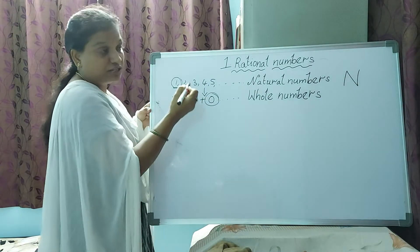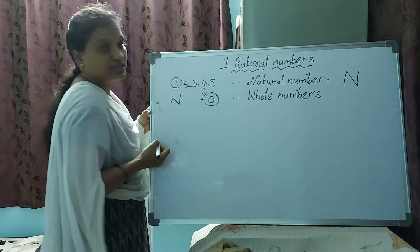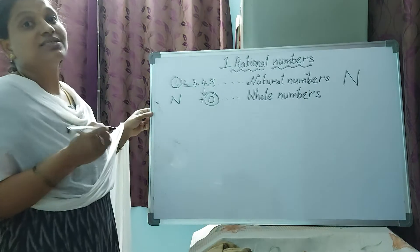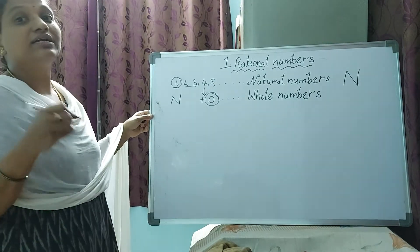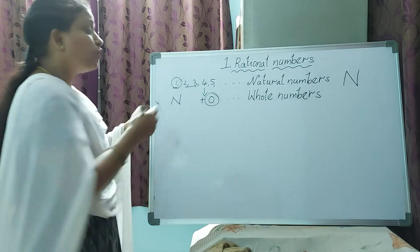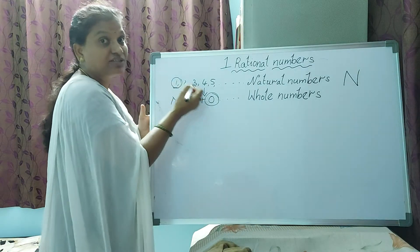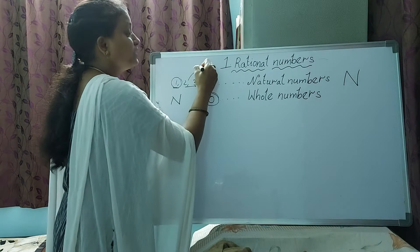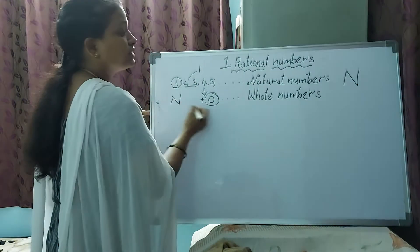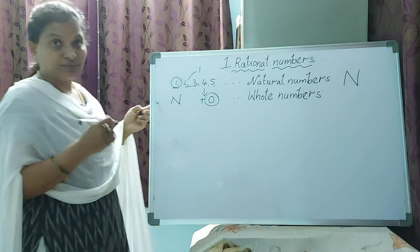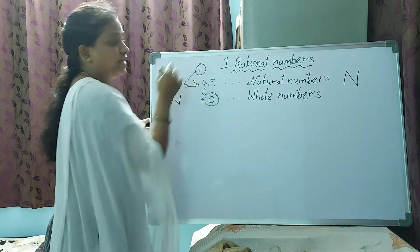What is the difference between any two successive natural numbers? Difference means subtraction. The difference between two successive natural numbers is always 1. Between two successive whole numbers, the difference is also 1.